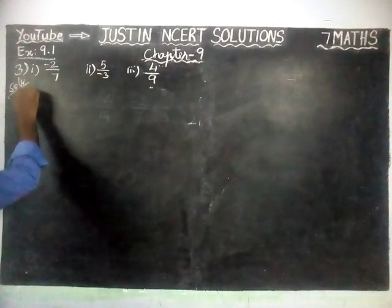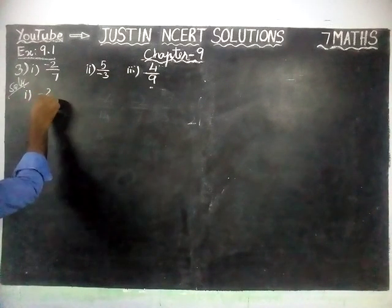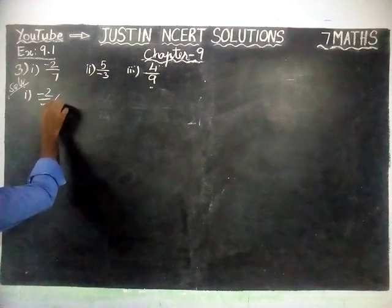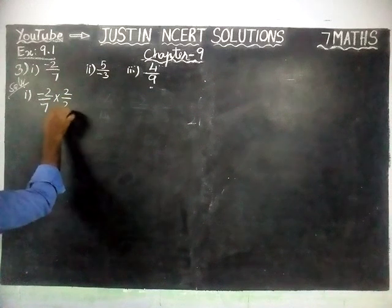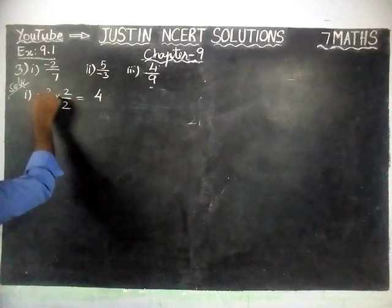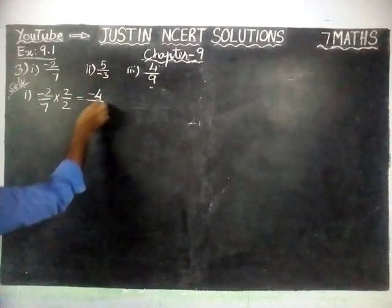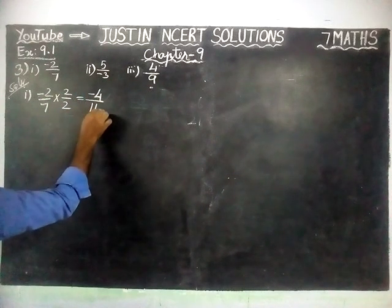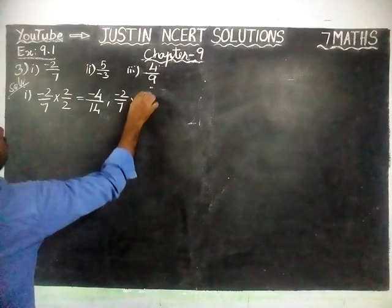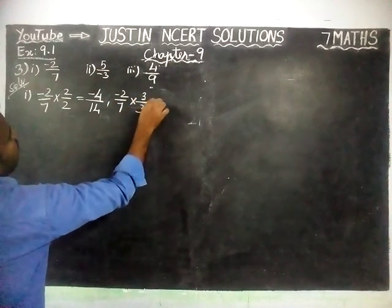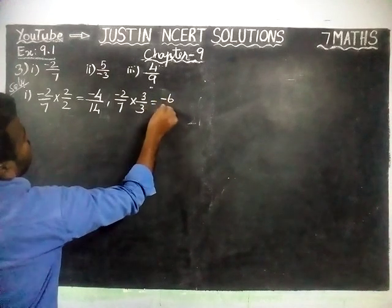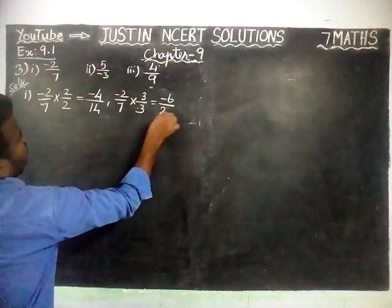Here, the first sum is minus 2 by 7. We are going to multiply and divide by the same number. Minus 2 by 7 into 2 by 2 is equal to: 2 2s are 4, plus into minus equal to minus, divide by 7 2s are 14. Next, minus 2 by 7 into 3 by 3 is equal to: 2 3s are 6, minus into plus equal to minus, divide by 7 3s are 21.